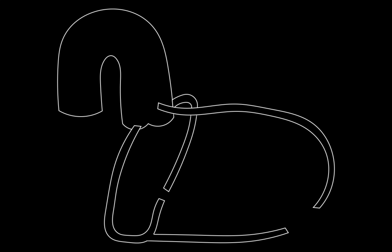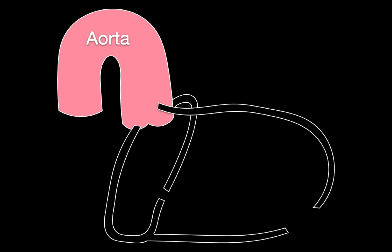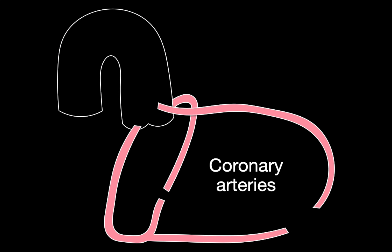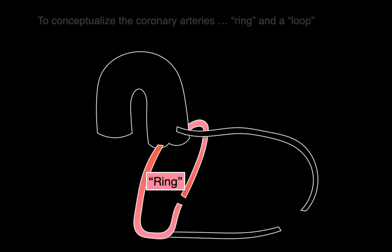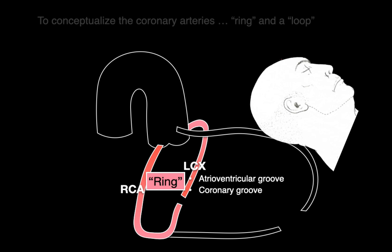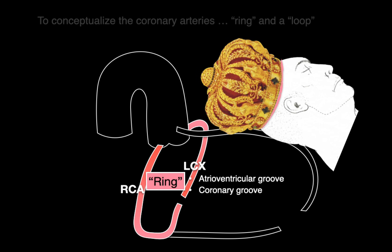To start off, we're going to use this very simple schematic where there's the aorta and there's the coronary arteries. We're going to use this schematic to conceptualize the coronary arteries through a ring and a loop system. There's the ring — it's formed by the right coronary artery and the left circumflex artery, and they course within the atrioventricular groove, also known as the coronary groove, making a ring. It's called the coronary groove because it forms along the top of the heart, much like a crown on the top of the head.